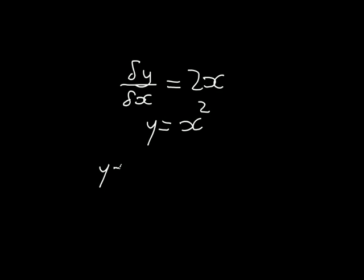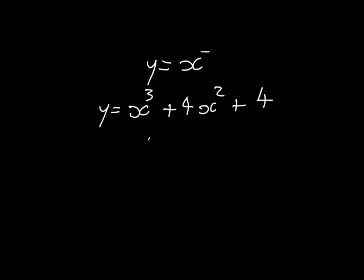So we say y equals x to the 3 plus 4x to the 2 plus 4. We reduce the powers and times by the new one, so dy/dx equals 3x squared plus 8x plus 0, because that is a constant and therefore it disappears away and we don't use it anymore.